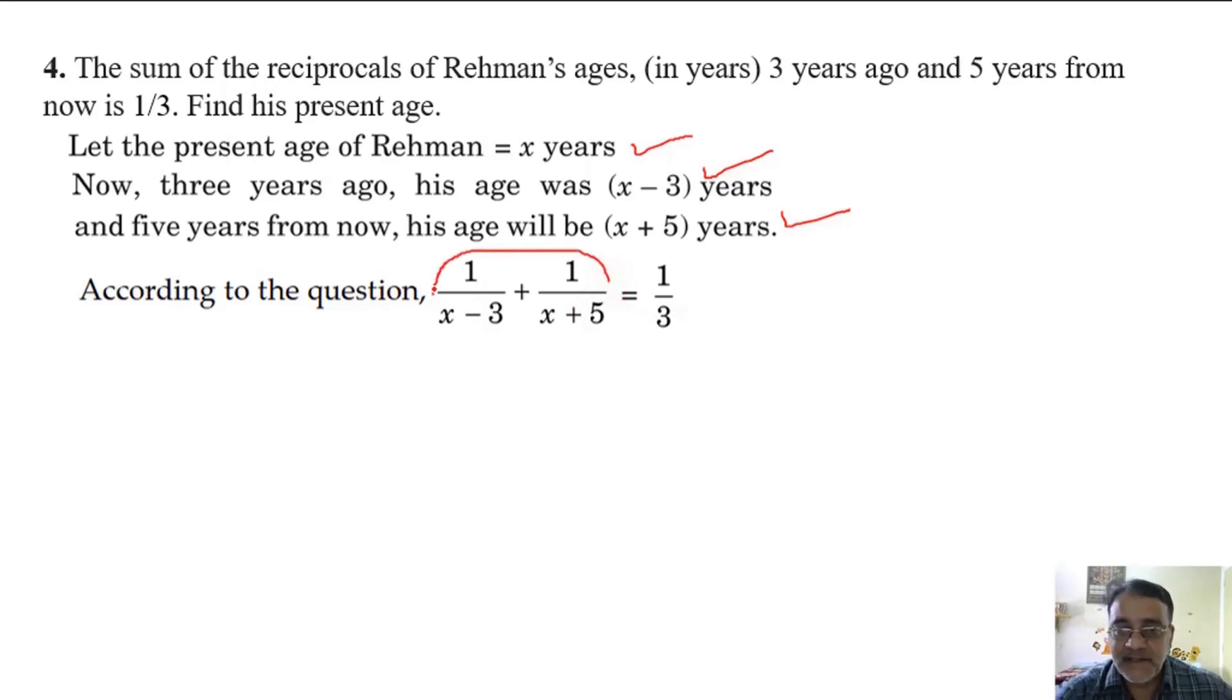Now we will take LCM here. So x plus 5 here or x minus 3 here. And this will become 2x plus 2. After that you have to do cross multiplication. So 3 into 2x plus 2, x minus 3 into x plus 5.